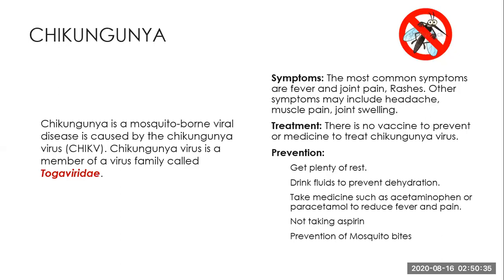Another disease is chikungunya, which is caused by a virus from the togavirus family. Symptoms include pain, joint pain, rashes, and muscle pain, and joint swelling. There is no treatment for this virus till now. Prevention includes drinking plenty of fluids, getting rest, and prevention of mosquito bites, as it is actually spread by mosquitoes. These measures can help people feel better or avoid being affected.